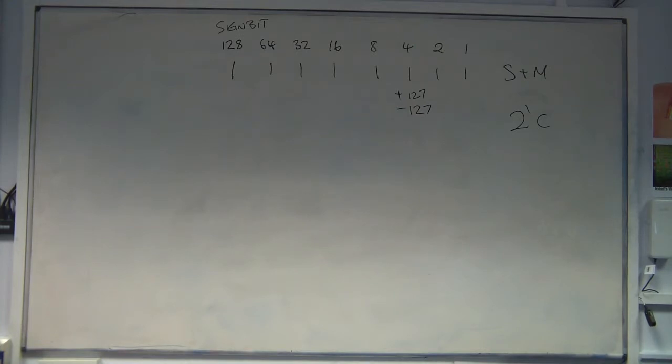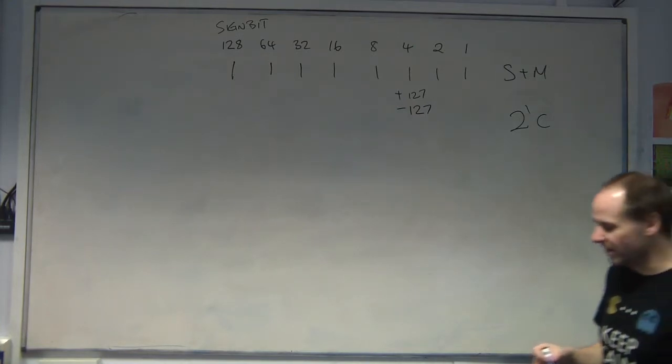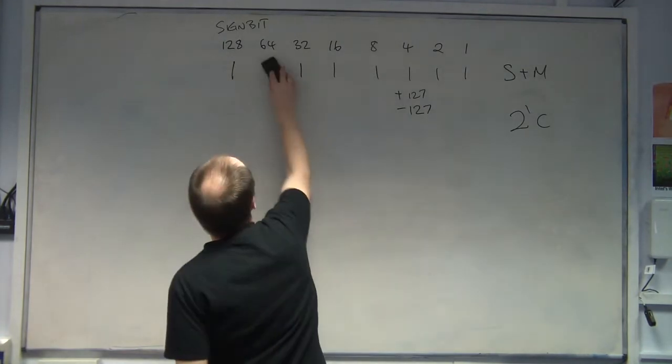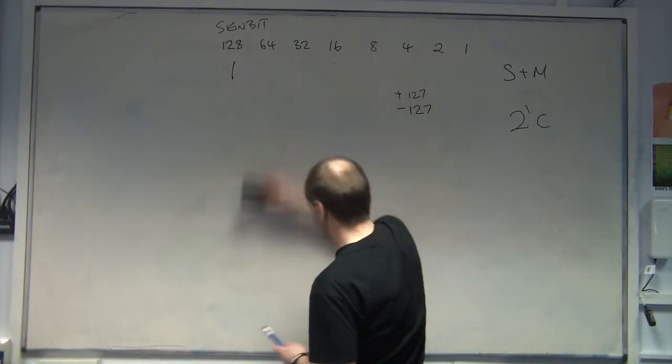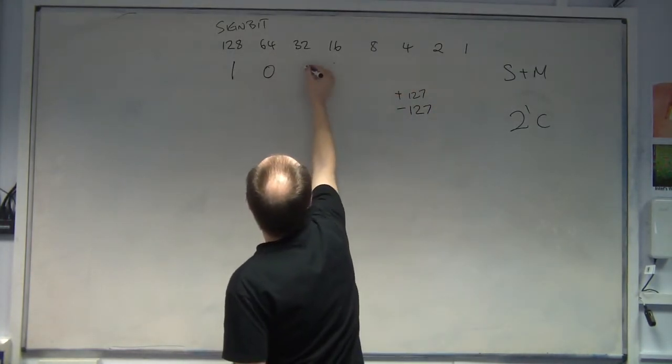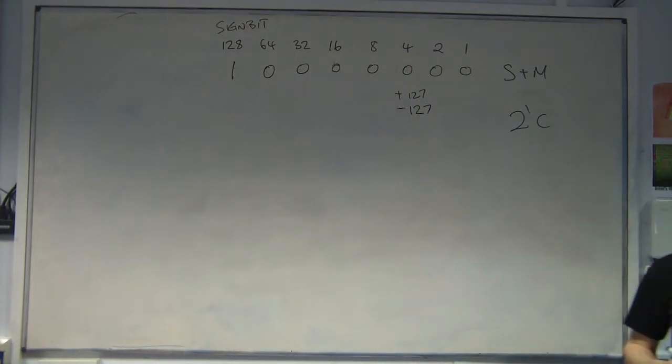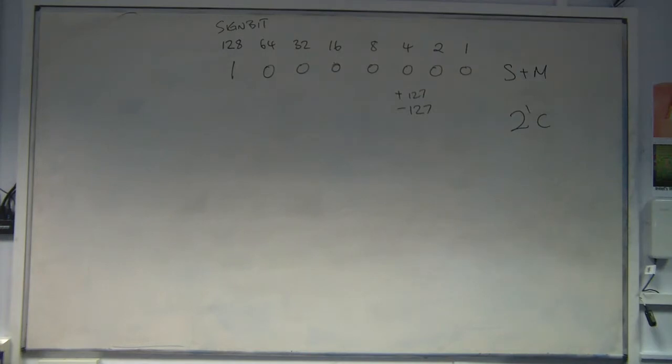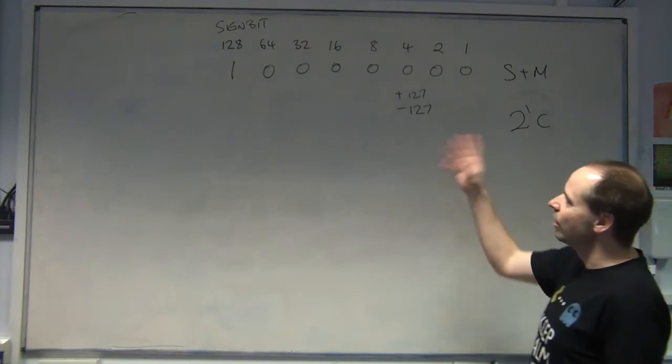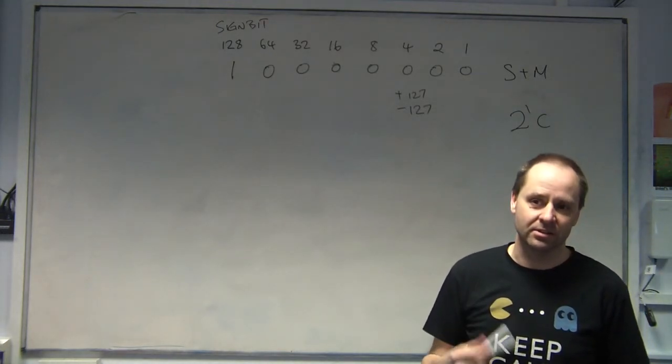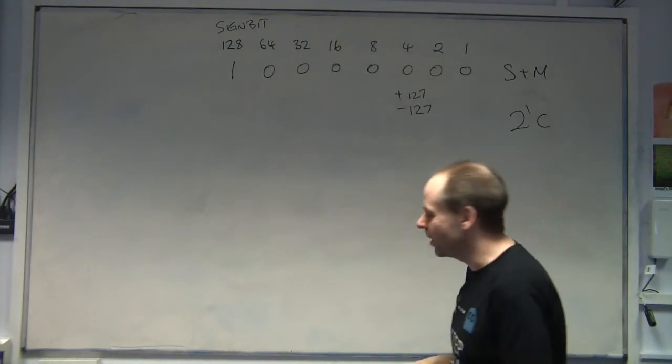But we have a weird thing happen with sign and magnitude, which is why it's a bit odd. We can have minus 0, which is a bit bonkers, because it doesn't make sense. You can't have minus 0. So we've got a representation that doesn't mean anything, which is not good. We don't want to waste bits.